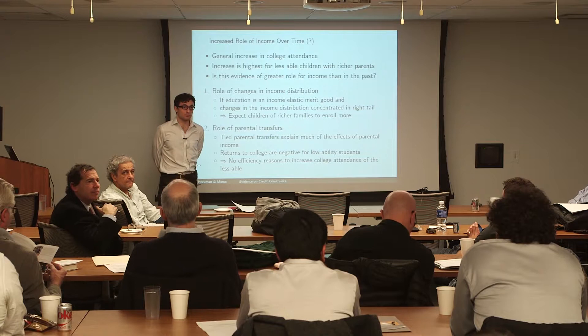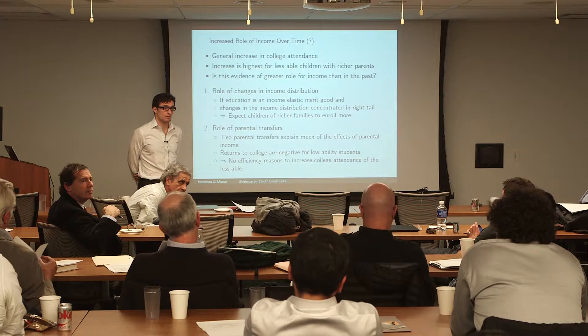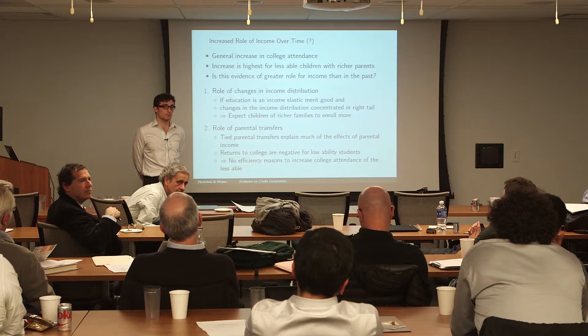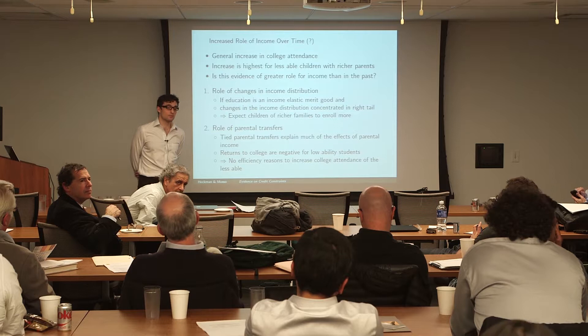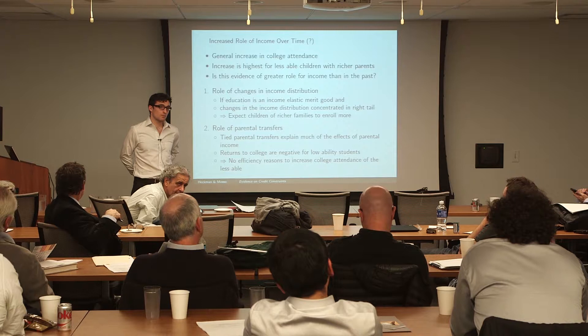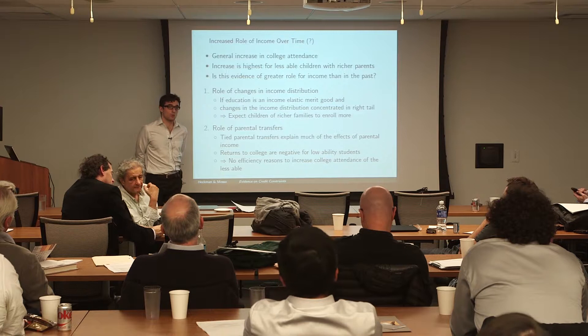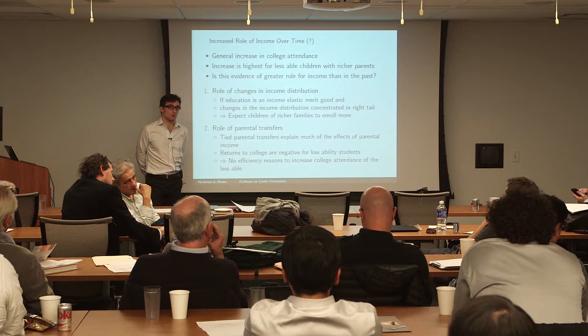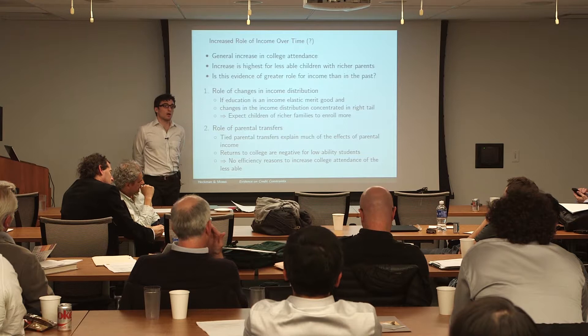What would explain why the gradient got steeper? I've always tried to be careful to say that a gradient doesn't imply borrowing constraints, because one can come up with a number of stories for it, including a consumption story. But what we emphasized more was that this gradient got quite a bit steeper, and that is much harder to reconcile with a consumption story — because rich people should respond less to the big increase in returns to college, since it is of less marginal value to them, while poor parents should respond much more.